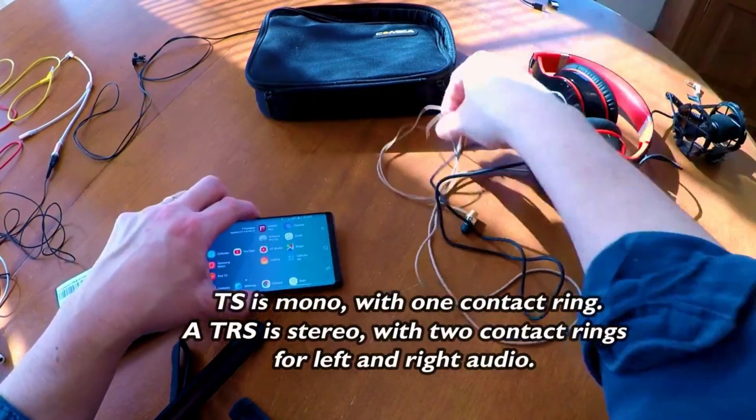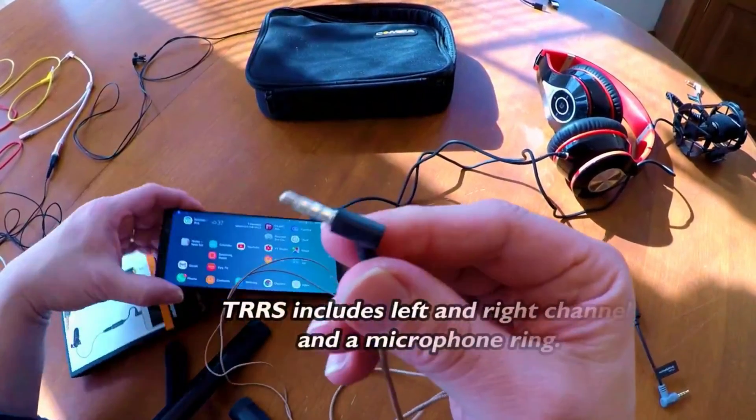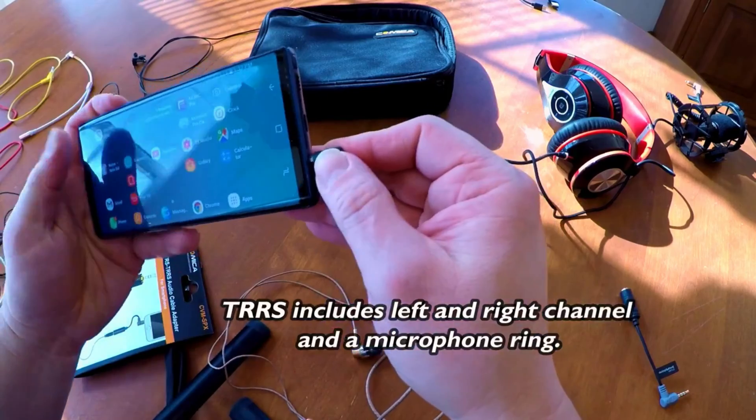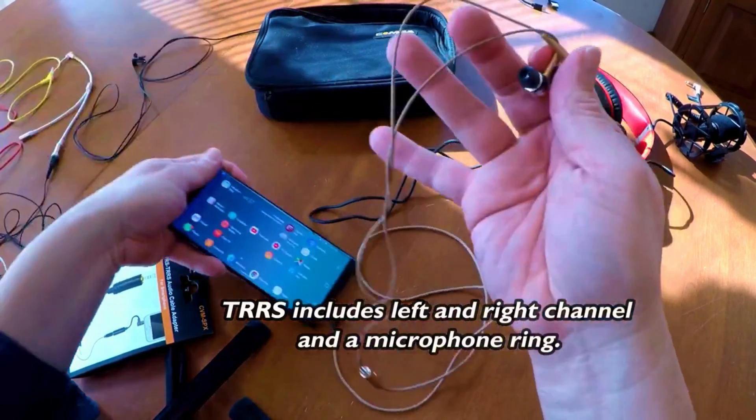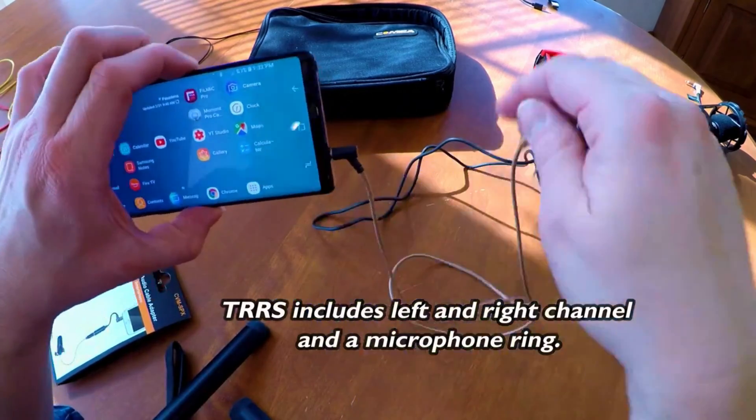But if you want to talk and listen at the same time, then you're going to need headphones that have a TRRS. Plug that in. And now I can listen and speak at the same time into the phone. Alright, great.